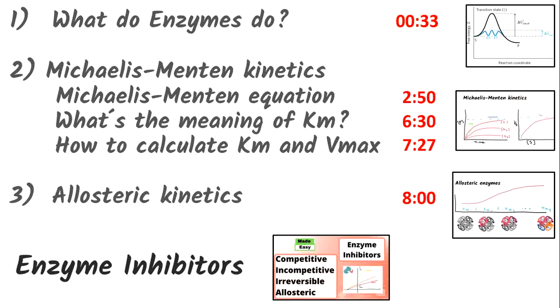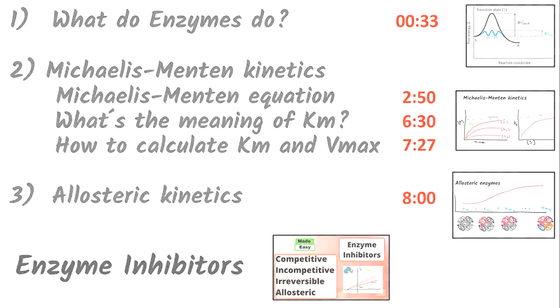In this video we will talk about enzyme kinetics, the Michaelis-Menten equation, where it derives from, what's the real meaning of Km, and how to calculate Km and Vmax out of the plots. Then we are talking about allosteric enzyme kinetics and the origin of their sigmoid curves. If you are interested in enzyme inhibitors, please check my video about it. If you want to jump to any section of this video, just look in the description below.